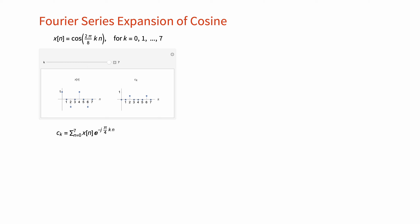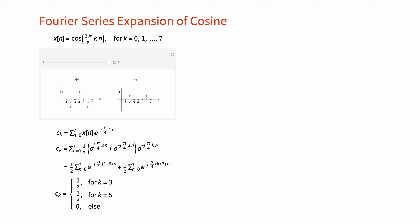To prove this by hand, we first represent the cosine functions using Euler's identity and then substitute into the Fourier series analysis formula. Expanding and simplifying the expression, we obtain the values of c_k.